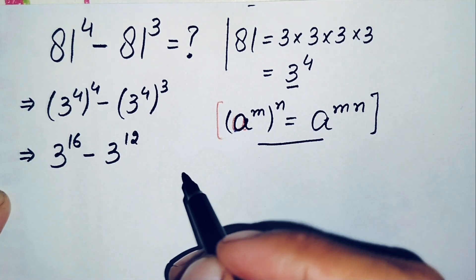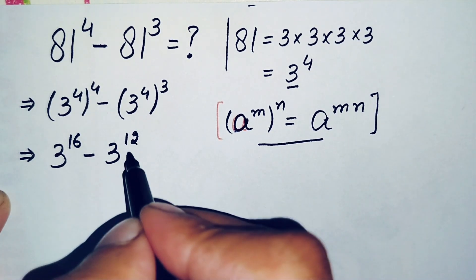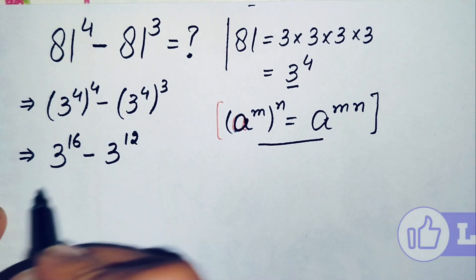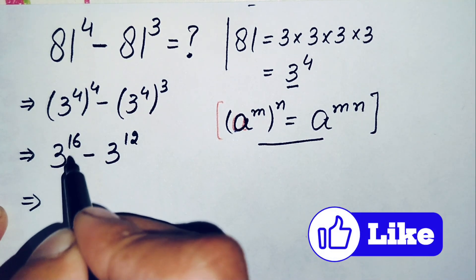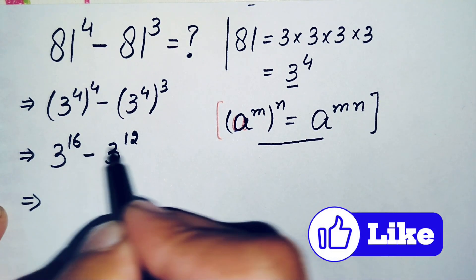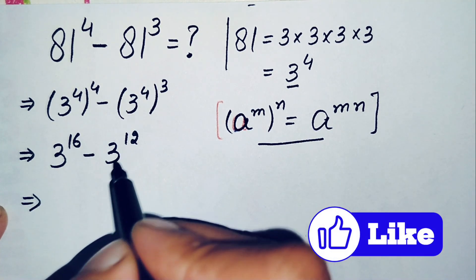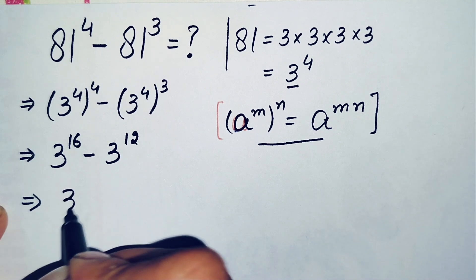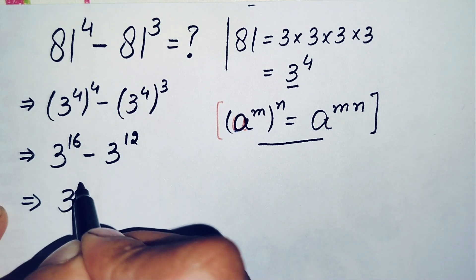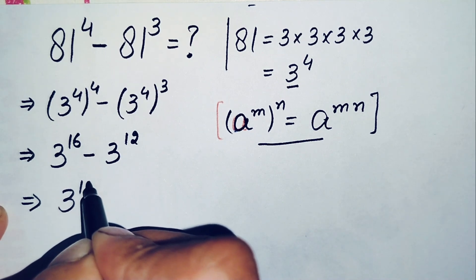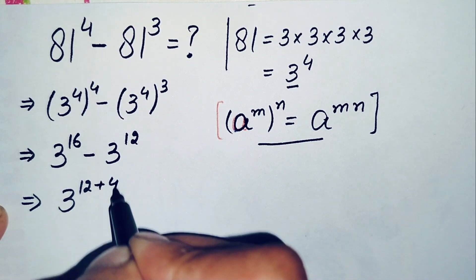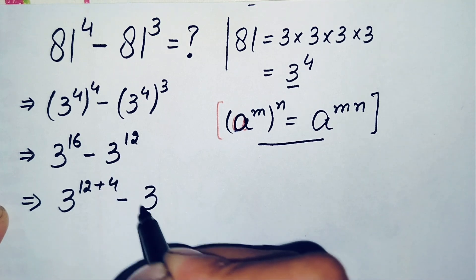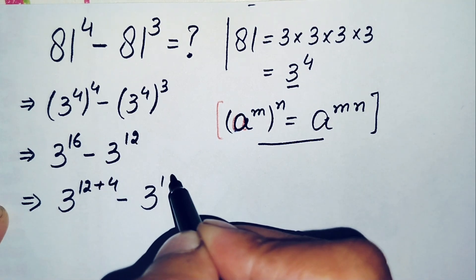Now we will try to make the powers the same. To do that, we change the 16 to the sum of 12 plus 4. So this becomes 3 raised to power 12 plus 4, minus 3 raised to power 12.